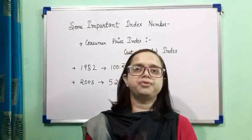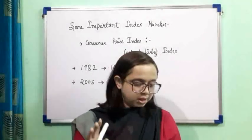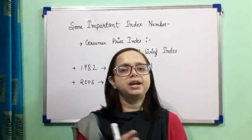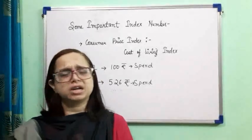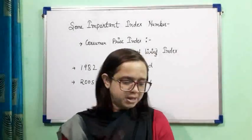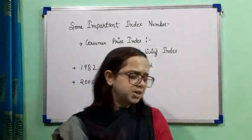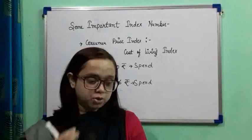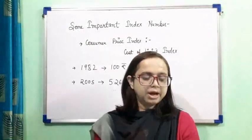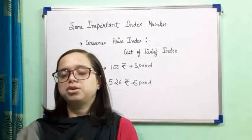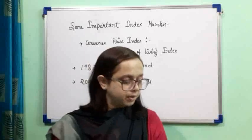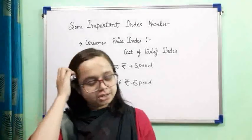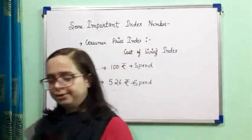Different classes of consumers consume different commodities in different proportions, so the Consumer Price Index is prepared separately for each group. Consumer Price Index numbers are also called the Cost of Living Index numbers and the Retail Price Index numbers.